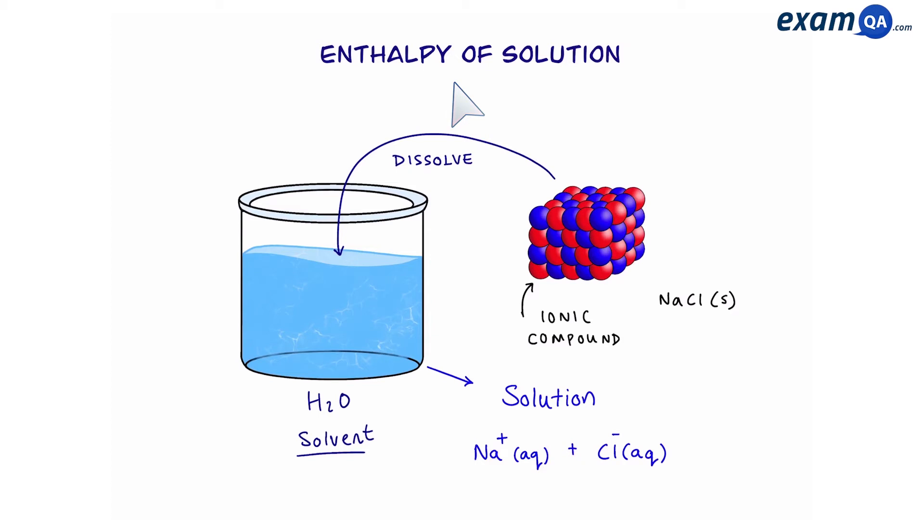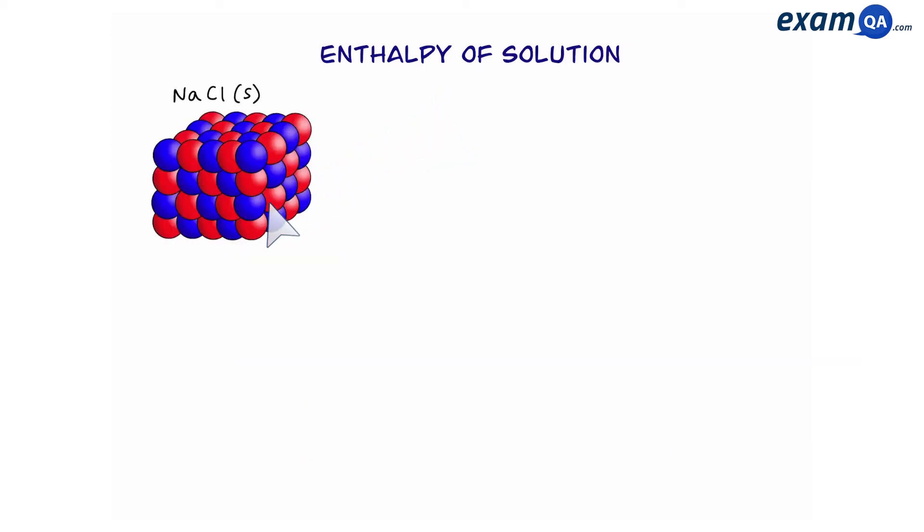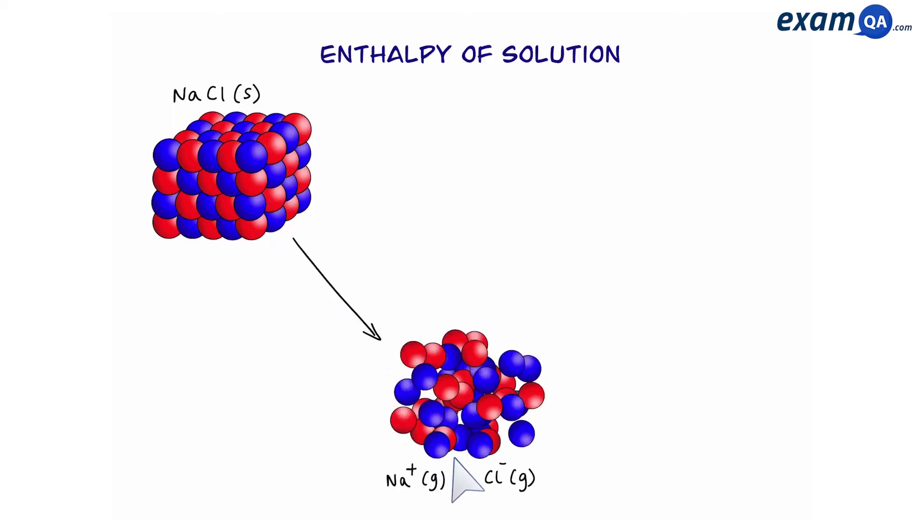Now let's have a closer look and see what happens at a molecular level. Here's our solid ionic compound. The moment we place it in water the ions get pushed apart until we have gaseous ions. This is called lattice enthalpy of dissociation and if you've done Born-Haber cycles this is literally the opposite of lattice enthalpy of formation.